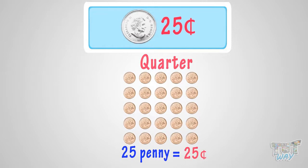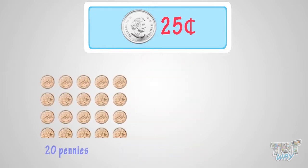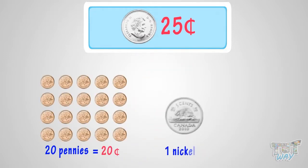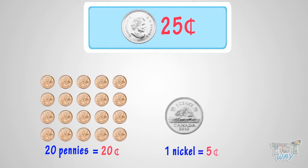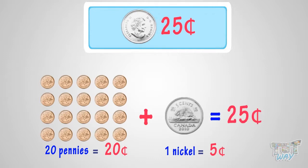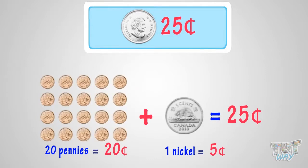Another way can be 20 pennies and a nickel. As 20 pennies make 20 cents, and one nickel is 5 cents, so in total we have 25 cents. 20 cents plus 5 cents equals 25 cents.